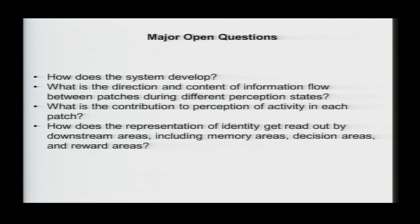So, major open questions are, you know, how does the system develop in the first place? What is the direction and content of information flow between patches during different perceptual states? And related to that, you know, what is the contribution to perception of activity in each patch? And finally, and very importantly, how does the representation of identity in AM get read out by downstream areas, including memory areas, decision areas like Mike Shadlen talked about yesterday, and reward areas? I'll just say a little bit more about these first two questions.